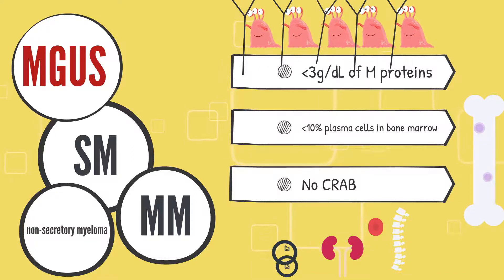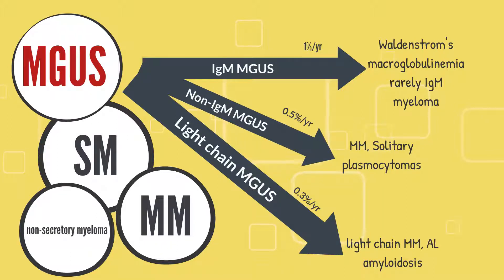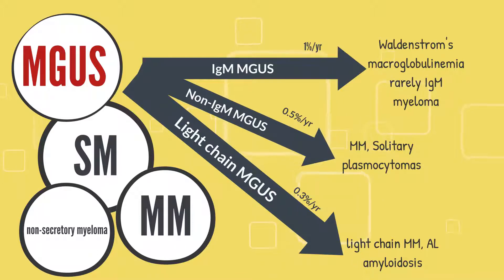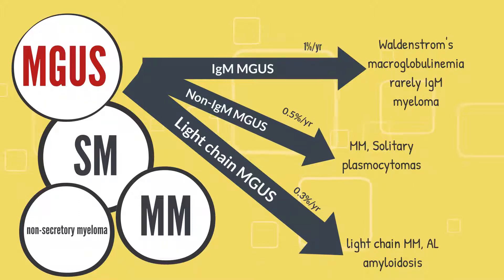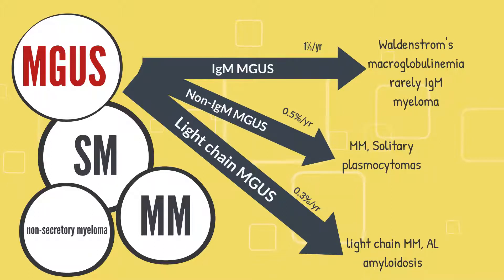MGUS on its own is benign. The significance of the large amounts of para-proteins is not known. However, MGUS can progress into something more sinister. The rate of progression depends on the type of para-protein produced. IgM MGUS has the highest rate of progression at 1% per year into Waldenstrom's macroglobulinemia and rarely IgM myeloma. Waldenstrom's macroglobulinemia is a type of blood cancer resulting in the excessive production of the very large IgM molecule, which increases blood viscosity and has the propensity to cause thrombotic events.